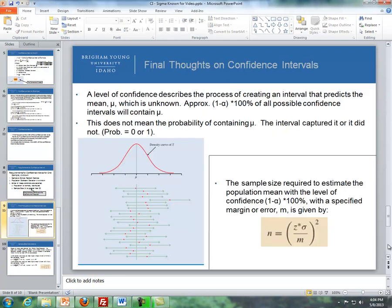Final thoughts on confidence intervals. The level of confidence describes the process of creating an interval that predicts the mean mu, which is unknown. So approximately 1 minus alpha, say if alpha is 0.05...